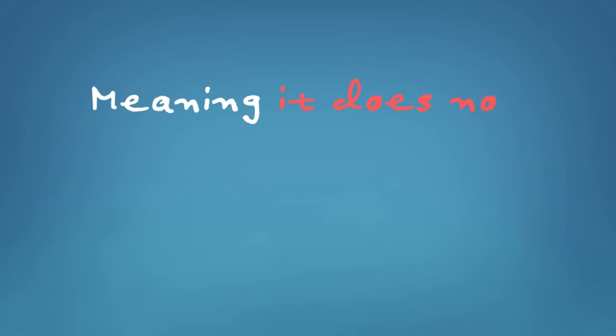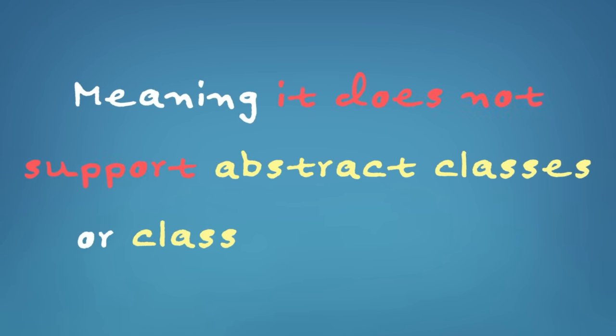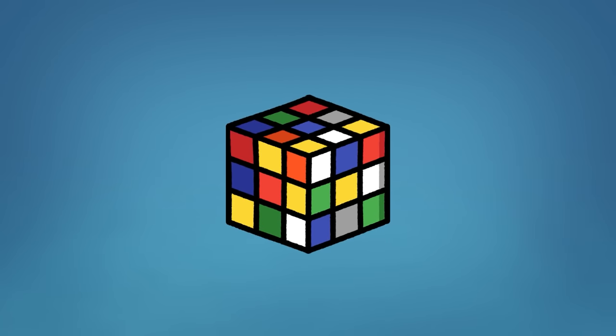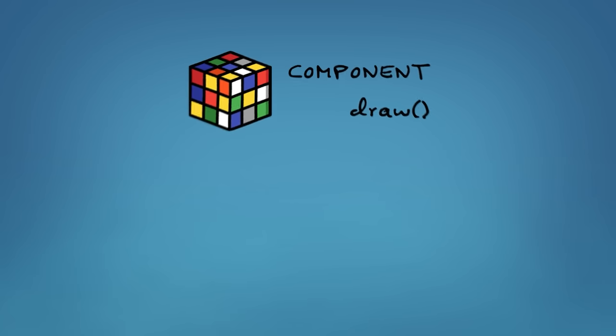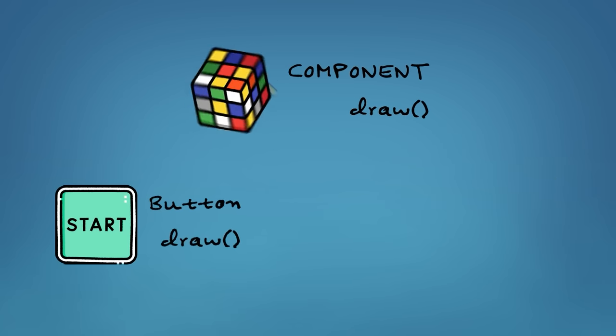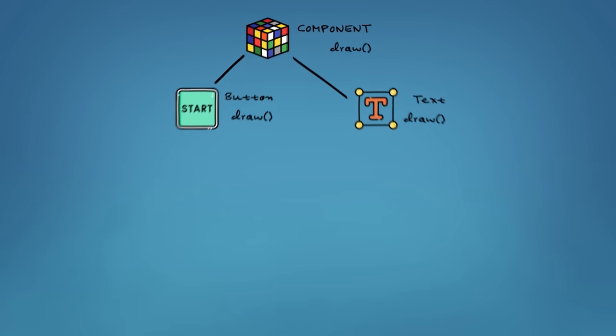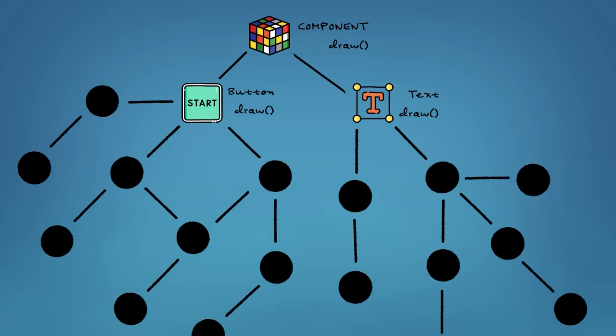Last but not least, Rust is not an object-oriented language like Java, C++, or JavaScript, meaning that it does not support abstract classes or class inheritance. An object-oriented language typically starts with a top-level class called component with a draw method. Then each component, like button or text, would inherit from this class and reuse its functions. You can see how it can become a headache really fast. Instead, Rust is slightly different because it has something called traits.